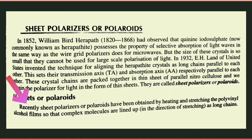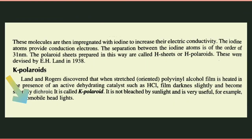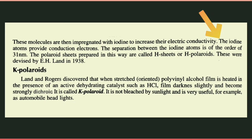Recently, sheet polarizers or polarites have been obtained by heating and stretching polyvinyl alcohol films so that complex molecules are lined up in the direction of stretching as long chains. Ek lambi chain ki tarah. These molecules are then impregnated with iodine to increase their electrical conductivity. In molecules ke andar hum iodine bhi dalte hain, ta ki unka jo electrical conductivity hai wo ziada ho.